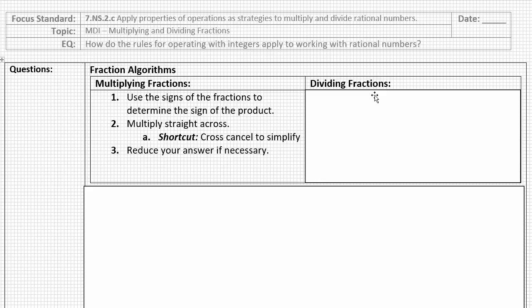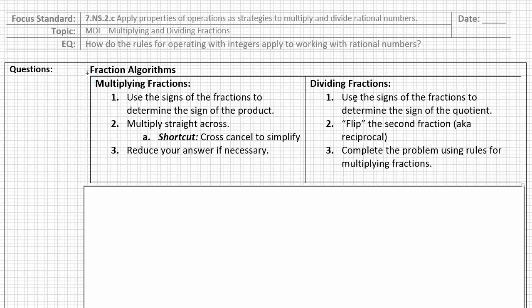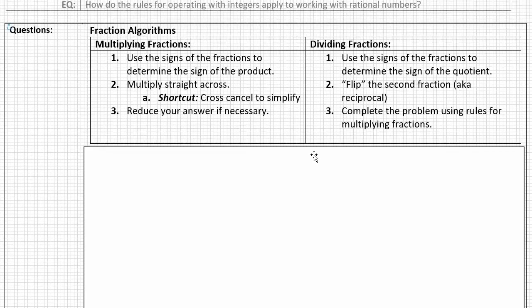For dividing fractions, the steps begin the same — using the signs of the fractions to determine the sign of the quotient. But then we flip the second fraction, which is technically called using its reciprocal — where the denominator becomes the numerator and the numerator becomes the denominator. Then we complete the problem using the rules for multiplying fractions: multiply straight across and reduce the answer if necessary. We're going to practice six problems today together to understand how to use these rules with positive and negative fractions.